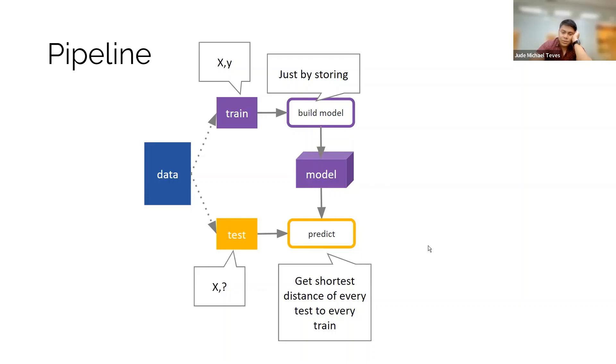So you get the shortest distance of every training point. Pretty much the same as what we've done earlier. I'm just showing you the pipeline here.